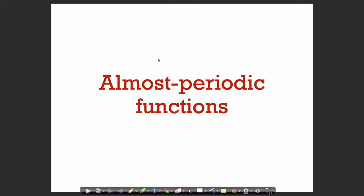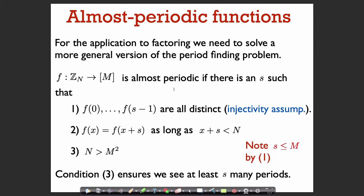In this video we're going to talk about a generalization of Shor's period finding algorithm for the case of simple periodic functions that we saw in the last video, to a more general kind of periodic function that we call almost periodic functions. And this is actually the case that we need for the application to integer factorization. So let's start off with the definition of an almost periodic function.